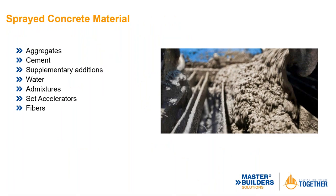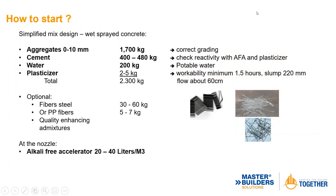Common materials — just like a concrete mix — are aggregate, cement, supplementary additions, water, admixtures, set accelerators, and fibers. A simplified typical mix design: aggregate 0 to 10 mm at 1,700 kg/m³ — get the correct grading; cement 400 to 480 kg/m³; potable water just like normal concrete. I have used 12 mm aggregate but you get more rebound and larger rebound pockets.